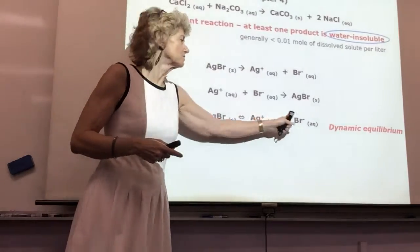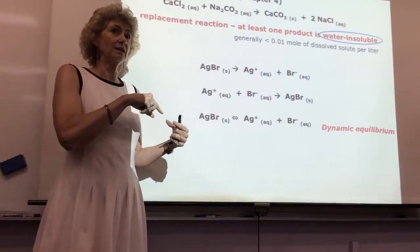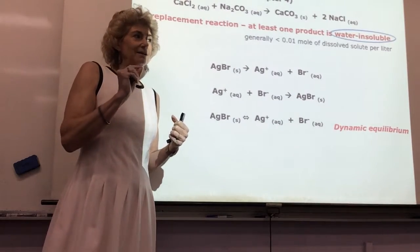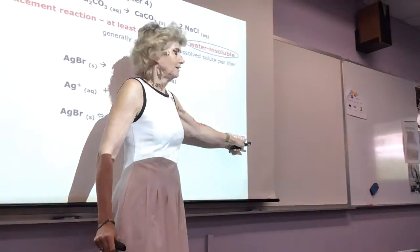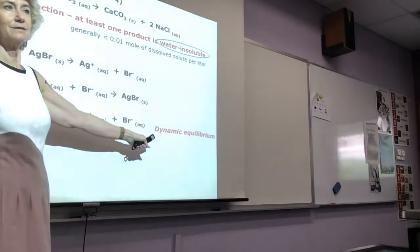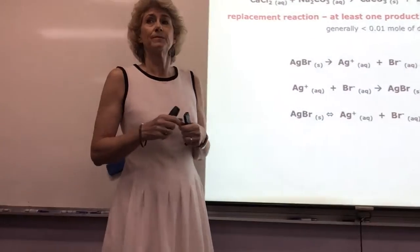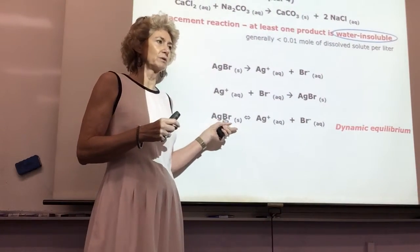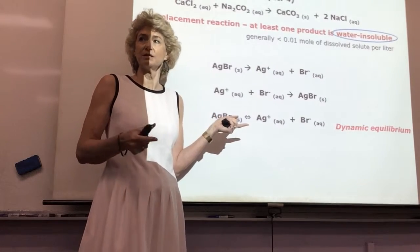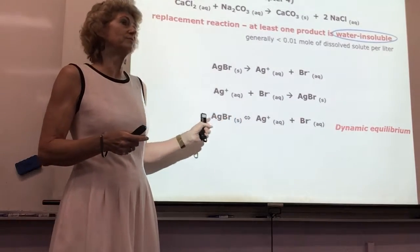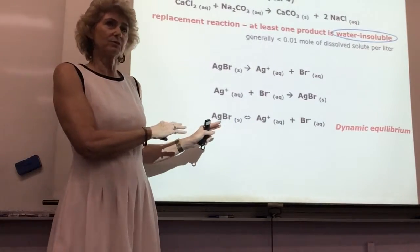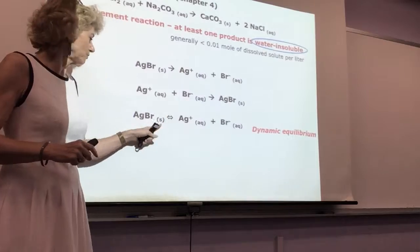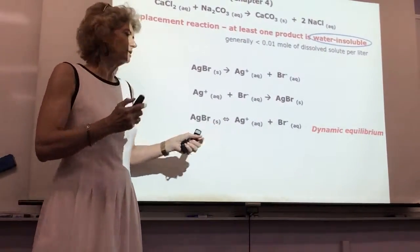The concentration of the ions over the precipitate is constant — until you change the temperature or add something to it. Remember, you have to disturb the equilibrium. Le Chatelier's principle: you have to disturb the equilibrium somehow for anything to respond. So if we increase the temperature, something will happen. But if you've just got this on the tabletop, the solution's ion concentration over the precipitate remains constant.